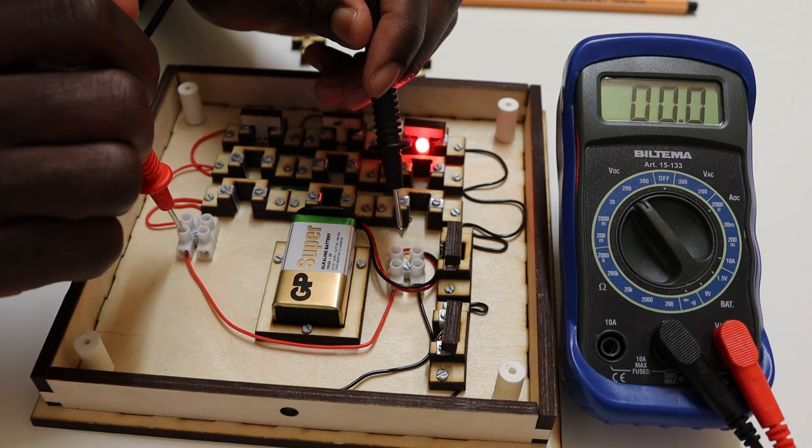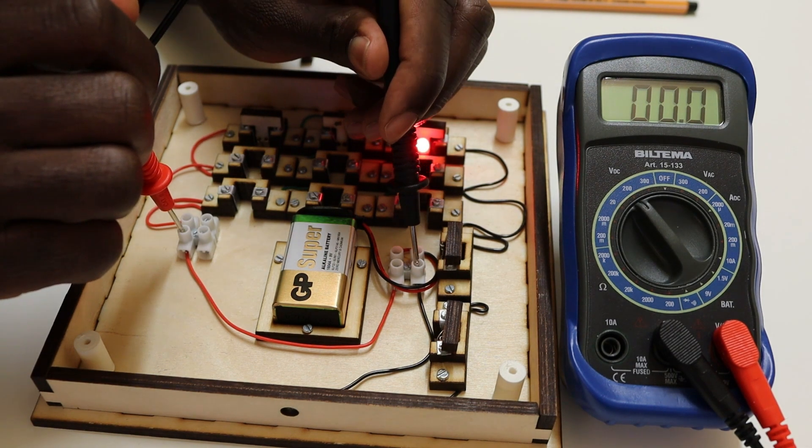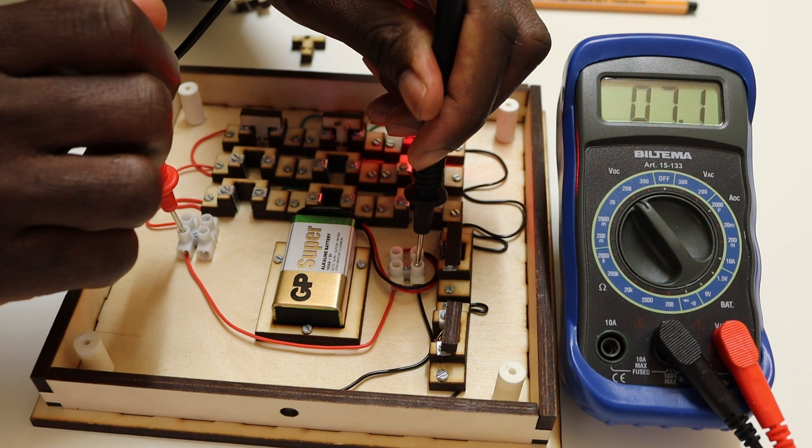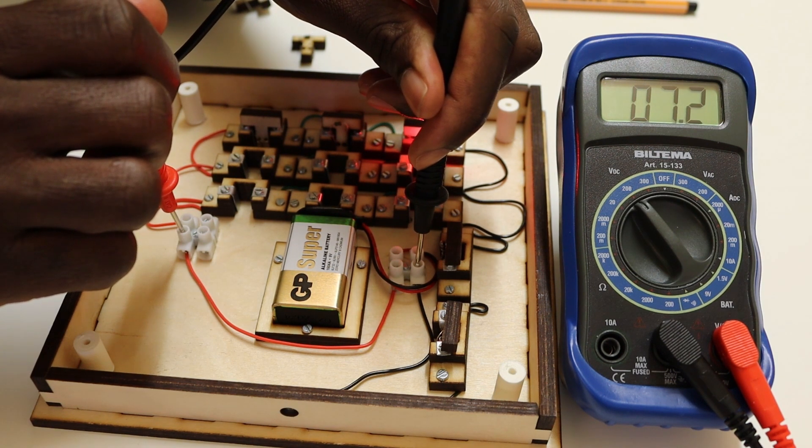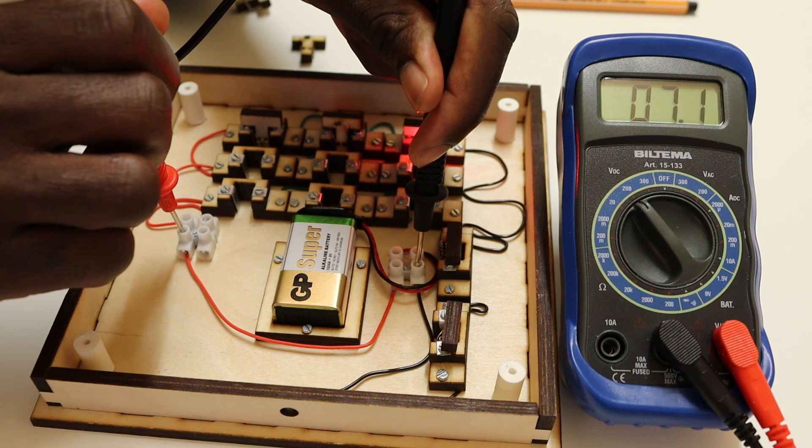I know this side is the negative terminal, so if I put it here, actually now it's reading 7.1, 7.2. Yes, we've been using it a lot, so it's draining. The voltage is not exactly 9 as it's supposed to be; it has gone down.